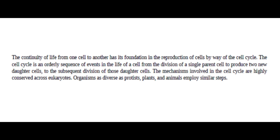The continuity of life from one cell to another has its foundation in the reproduction of cells by way of the cell cycle. The cell cycle is an orderly sequence of events in the life of a cell, from the division of a single parent cell to produce two new daughter cells, to the subsequent division of those daughter cells. The mechanisms involved in the cell cycle are highly conserved across eukaryotes. Organisms as diverse as protists, plants, and animals employ similar steps.